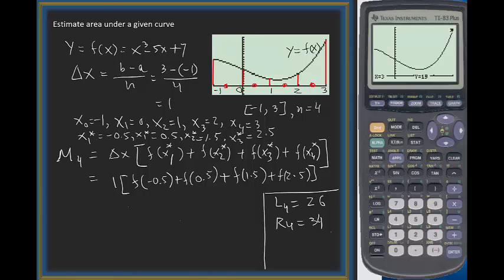Now we are taking midpoint approximation. Let us look at the midpoints. Between -1 and 0, the midpoint will be -0.5. 0 to 1, midpoint will be 0.5. 1 to 2, midpoint is 1.5, and 2 to 3, midpoint is 2.5. We list all of this and we need to find those values from the function.